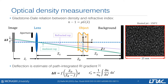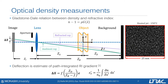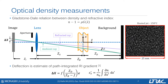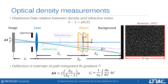The background-oriented Schlieren technique is an optical method of density measurement which relies on the Gladstone-Dale relation between a fluid's refractive index and its density. As light rays propagate from a background pattern through a flow, they experience a deflection due to the refractive index gradients, and the camera detects this as an apparent displacement of background features.